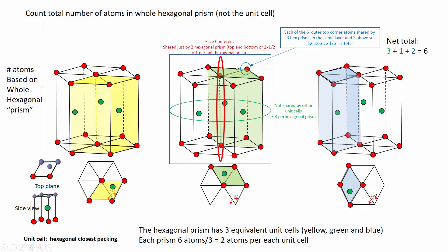Let's look at this entire hexagonal prism. There are three green atoms that are totally internal to the hexagonal prism, so they each contribute fully. Then we have face atoms — two of these, each contributing one-half, giving us one more. The corner ones are most difficult to envision. This corner atom here would be shared among two other hexagonal prisms in this layer, and then another three on top, for a total of six hexagonal prisms. So only one-sixth of each corner atom belongs to any one hexagonal prism.